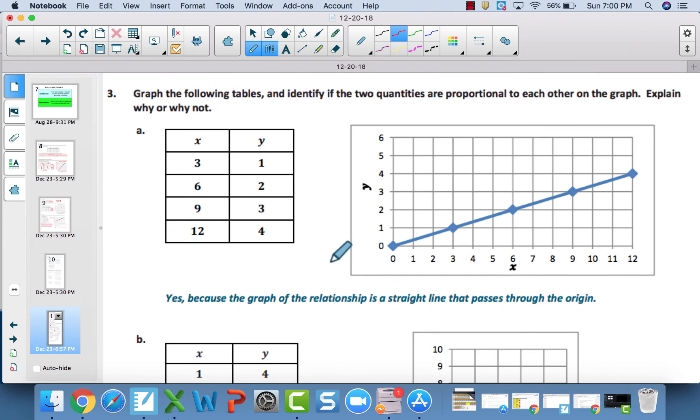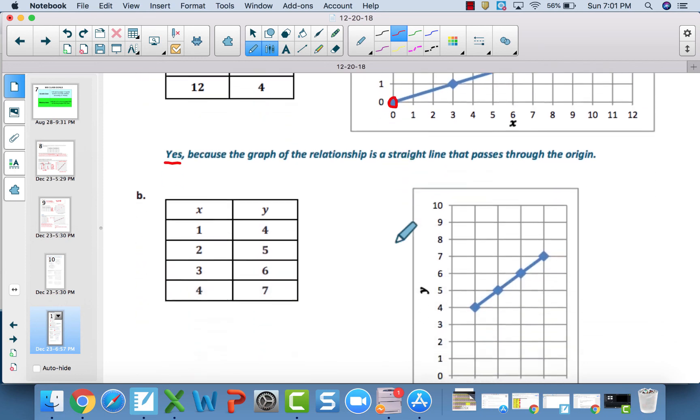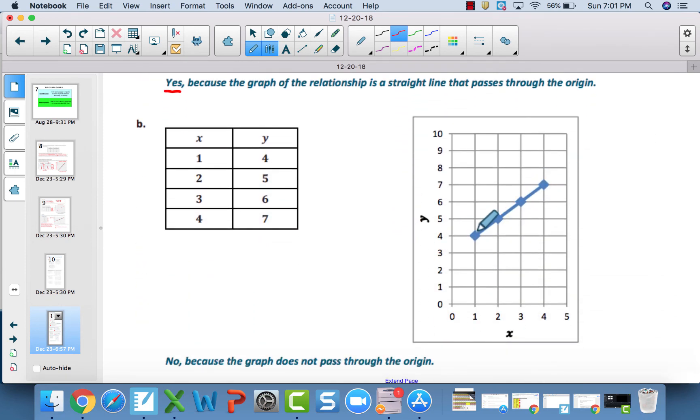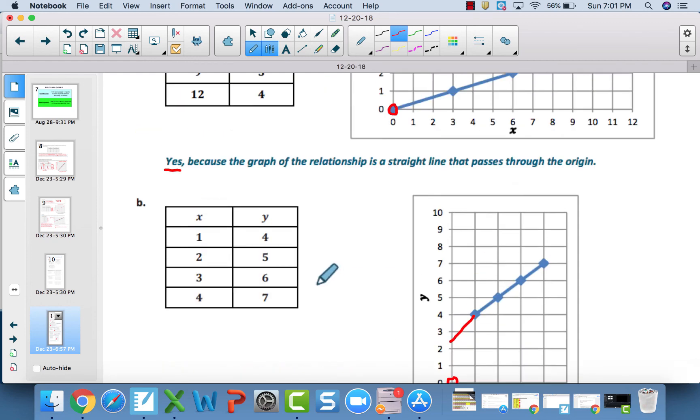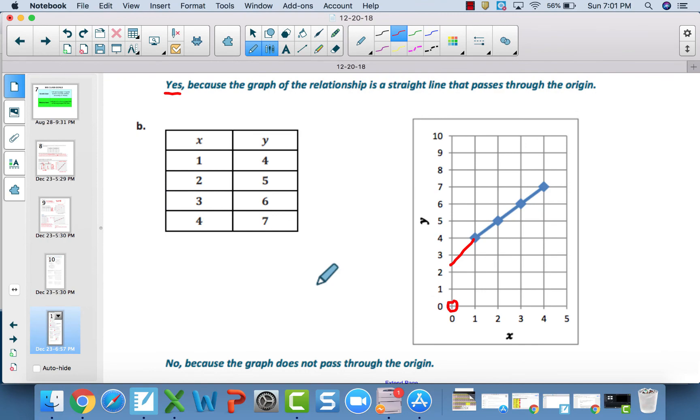3a is proportional. It creates a nice straight line that goes through the 0, 0 origin point. Because it fits both of those criteria, it is proportional. For B, although it creates a straight line, if you continue this line, it's not going to go through the origin. Because it is a straight line but doesn't fit the other criteria of going through the 0, 0 point, 3b happens to not be proportional.